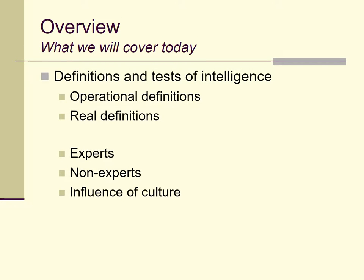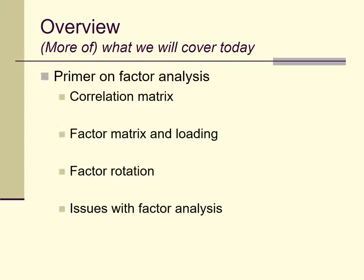By way of an overview, I'm going to try and offer some definitions for what intelligence is, talk about how scientists think about definitions, and consider how those definitions differ across experts and non-experts and across cultures. I'm then going to talk about factor analysis. I've mentioned it before in the history lectures, and I want to summarize it because it's so important to appreciate the development of various theories of intelligence.